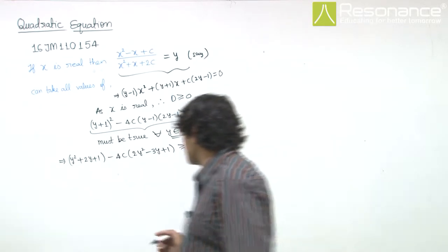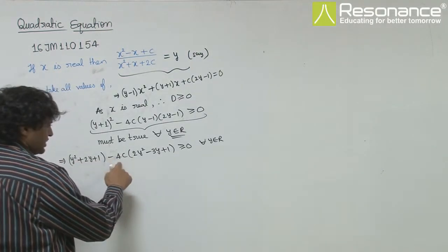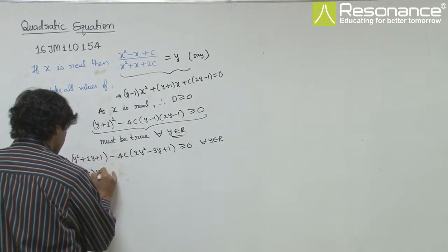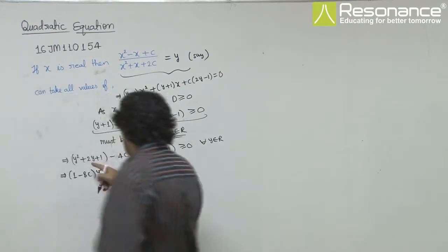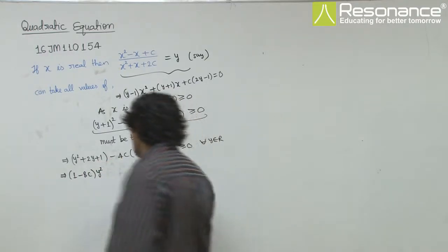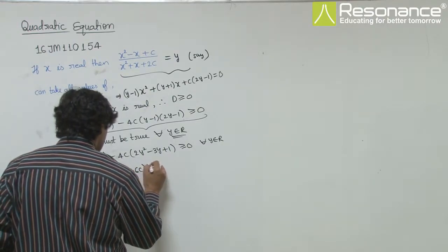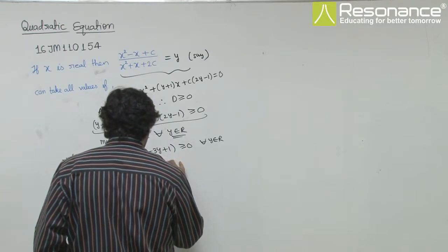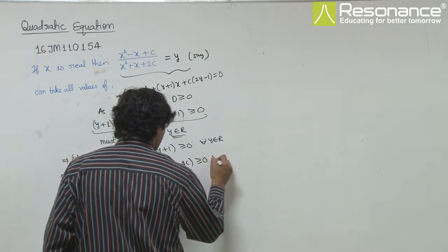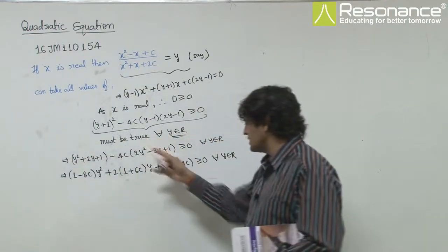So, further simplifying, this will become y square minus 8c y square. So, this is (1 minus 8c)y square, 2(1 plus 6c)y, and (1 minus 4c) must be greater equal to 0 for all y belongs to R. This must be true for all values of y.